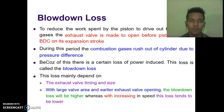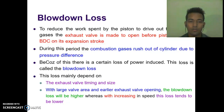Next is blowdown loss. To reduce the work spent by the piston to drive out the exhaust gases, the exhaust valve is made to open before the piston reaches BDC on its expansion stroke. During this period, the combustion gases rush out of the cylinder due to pressure differences, resulting in a certain loss of power. This loss is called blowdown loss. It mainly depends on exhaust valve timing and size. With a large valve area and earlier exhaust valve opening, the blowdown loss will be higher, whereas with increasing speed, this loss tends to be lower.